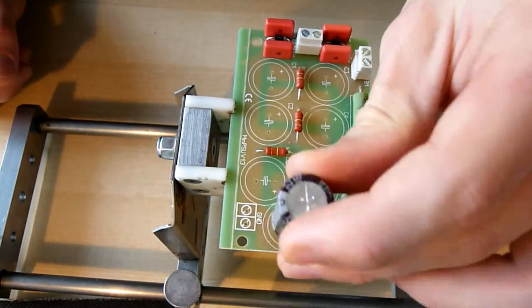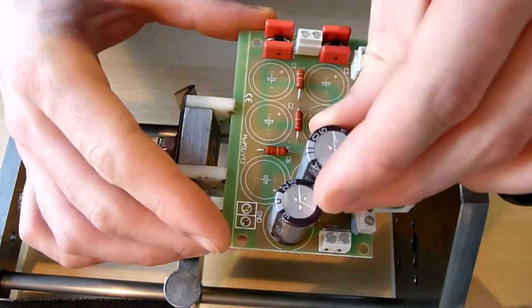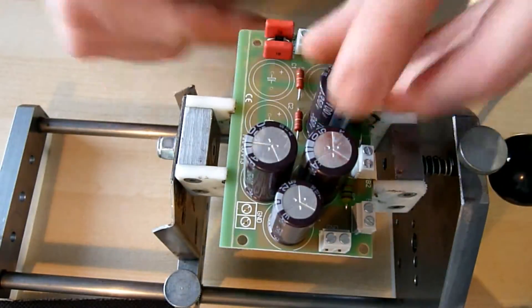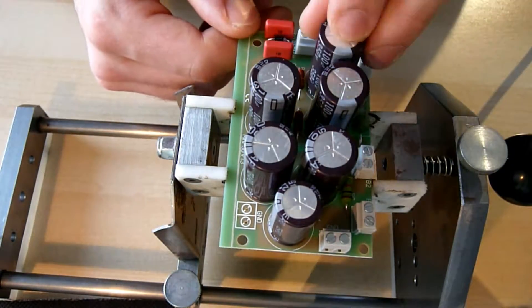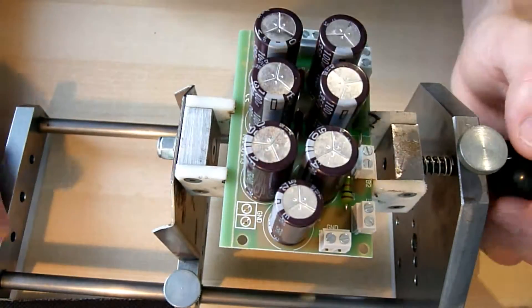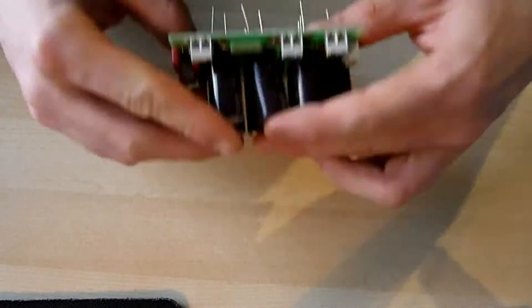Our small electrolytic capacitor comes into C7. The other 6 big ones in the remaining spots. When fitting them in, check their polarity. Long leg, positive side, short leg, the negative side.